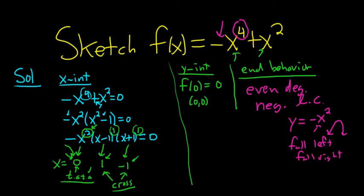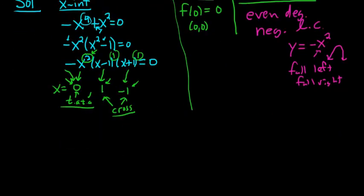Now that we have the end behavior and the intercepts, we should be able to graph our function. So let's go ahead and do it. I'm going to draw the y-axis and the x-axis.